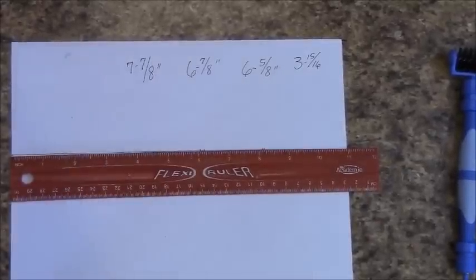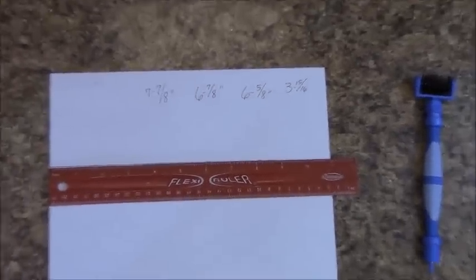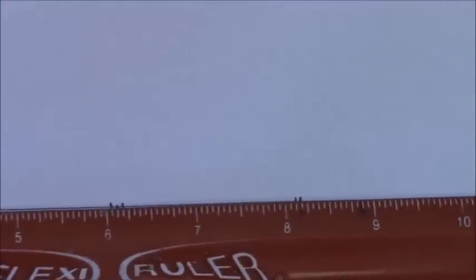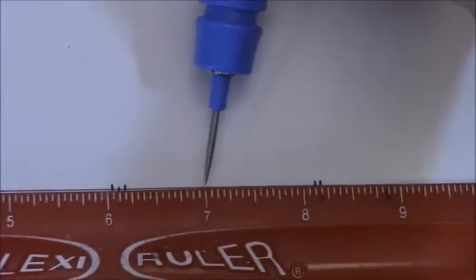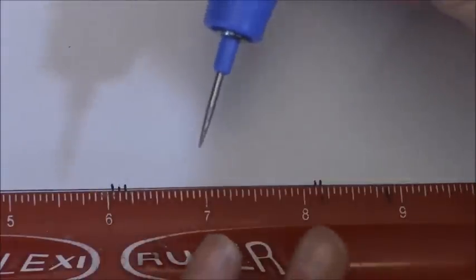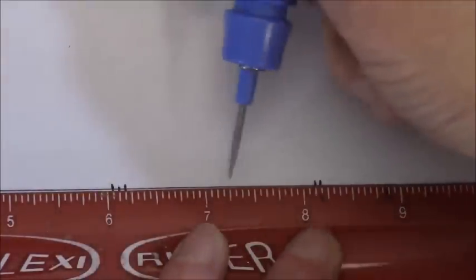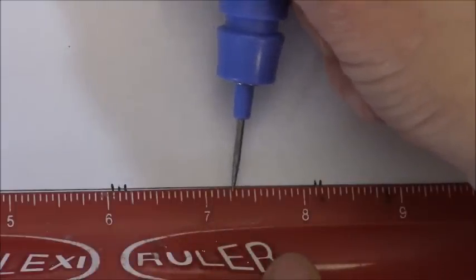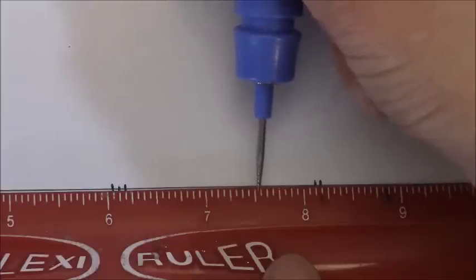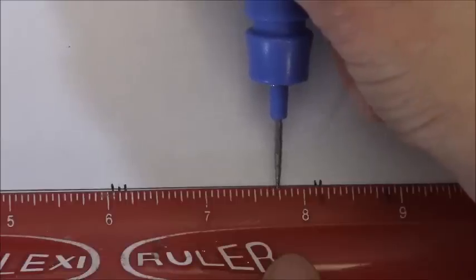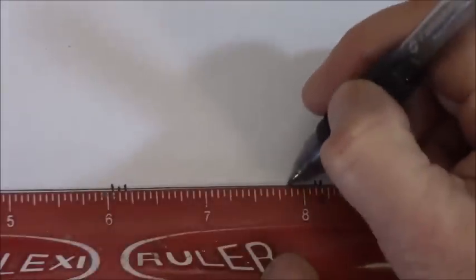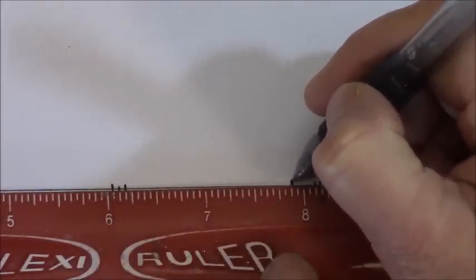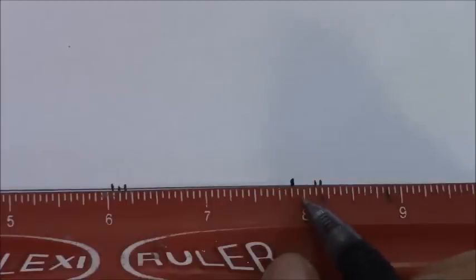Let's find those. The first one is 7 and 7/8ths. And I am going to zoom in here. Let's see here. 7 inches is right here. And we're dealing in eighths. So let's go ahead and count. 1, 2, 3, 4, 5, 6, 7. It's right there. 7 and 7/8ths is right there. Did you get it right?